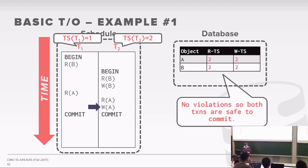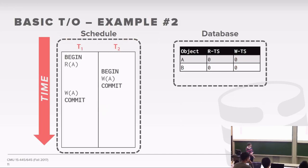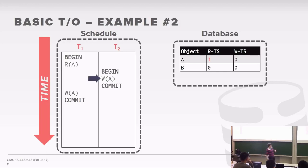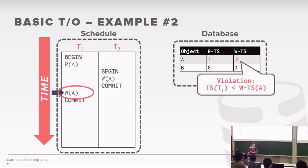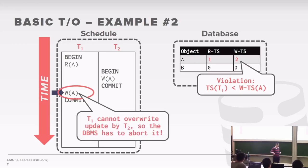Example 2: T1 reads A, writes A; T2 writes A. T1 reads A, updating the read timestamp to 1. T2 writes A, setting the write timestamp to 2. When T1 now tries to write A, its timestamp (1) is less than the object's write timestamp (2) — a violation. T1 must abort because it's not allowed to overwrite the value T2 wrote; doing so would not be equivalent to any serial ordering.